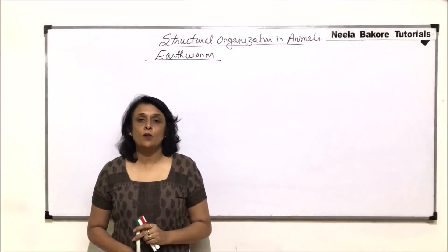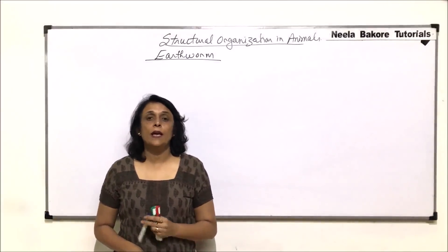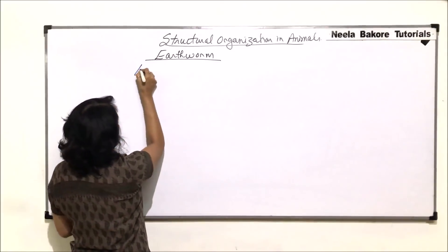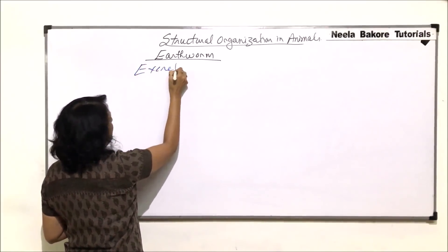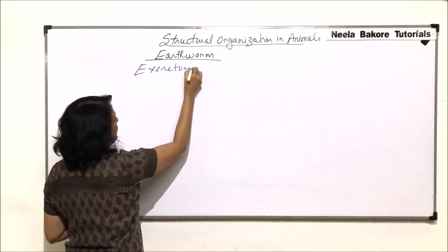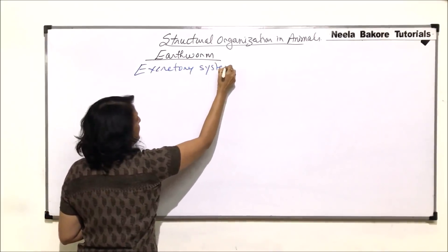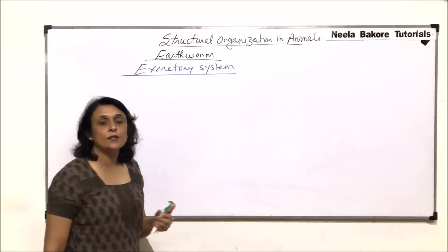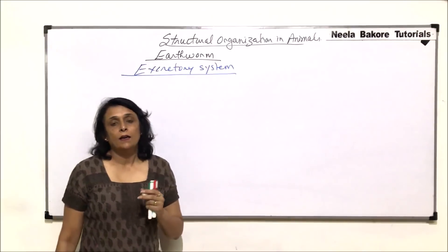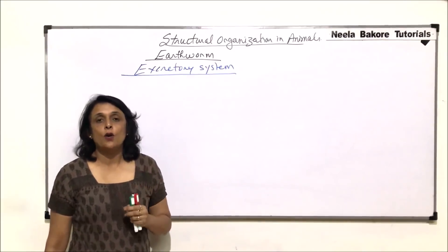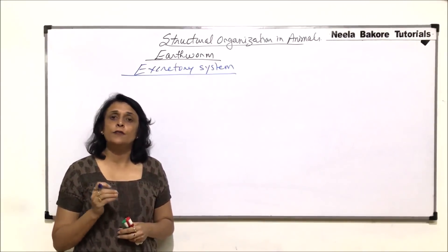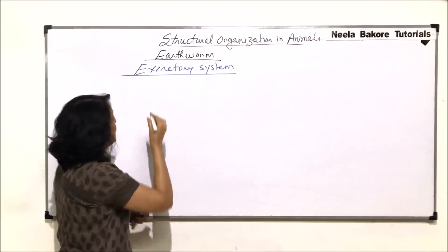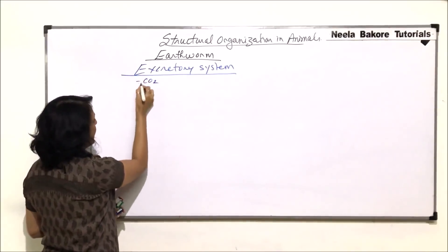In this part we'll be talking about the excretory system in earthworms. The excretory system basically works on removal of waste, and these wastes are of two categories: one is carbon dioxide and the other is nitrogenous waste.